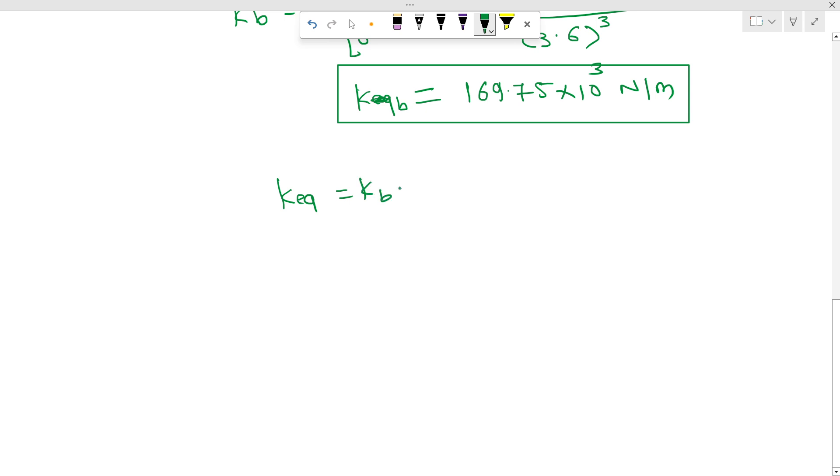Kb plus 2K. Kb equals 169.75 times 10 raised to 3 plus 2 times our K value given is 40 times 10 raised to 3 because we want it in Newton. So we will get K equivalent equals